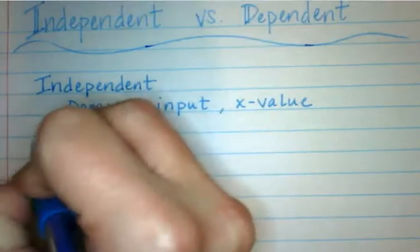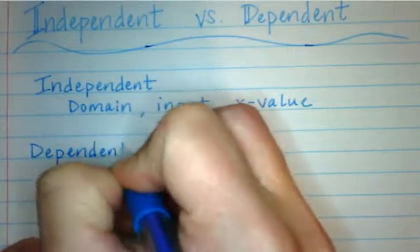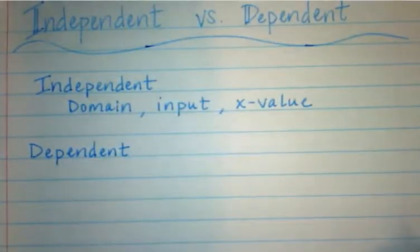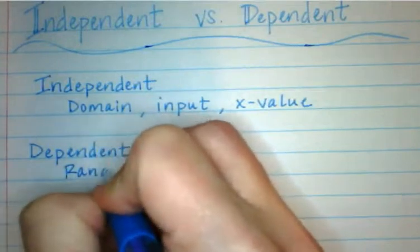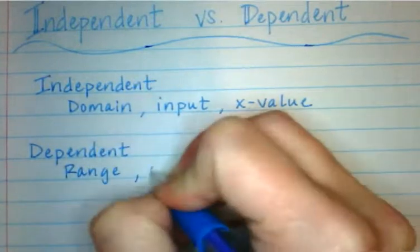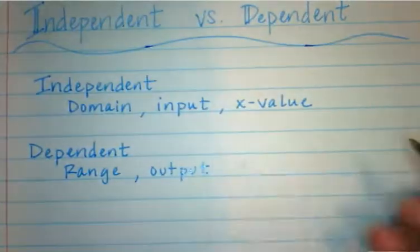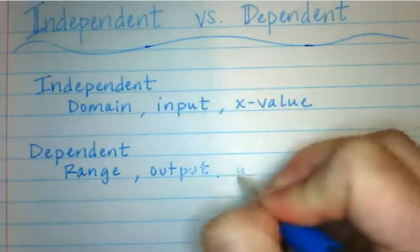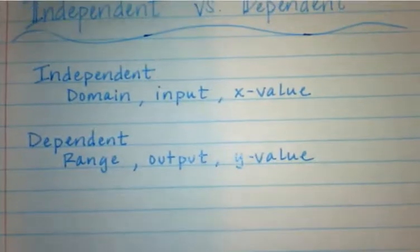Then, if you think about what dependent means, something that is dependent depends on something else. So that is our range, or the output depends on the input, and the y-value depends on the x-value.